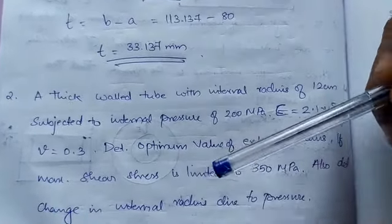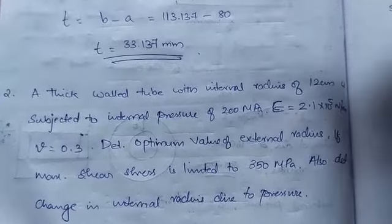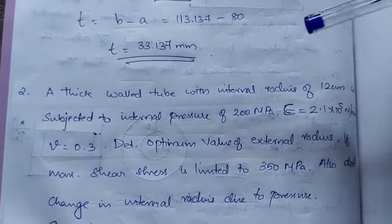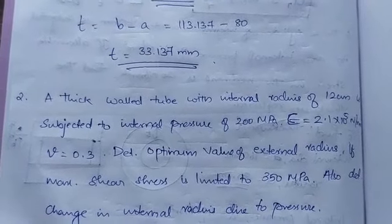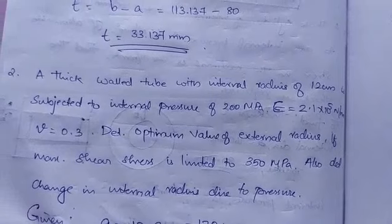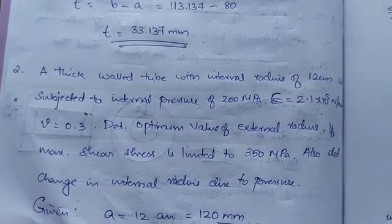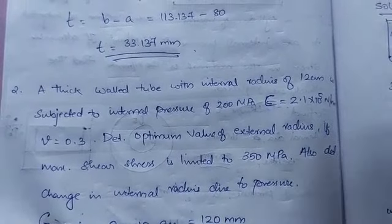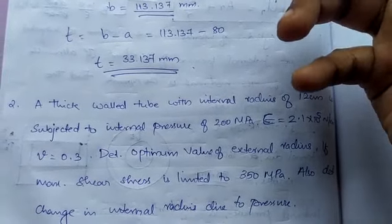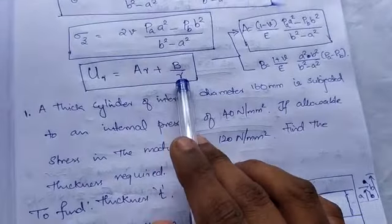Maximum shear stress = (sigma_theta − sigma_r) / 2, that is maximum stress minus minimum stress divided by 2 — we have used this since Mohr's circle. We also need to determine the change in internal radius due to pressure. Due to this internal pressure there will be some displacement u_r, here specifically u_a.